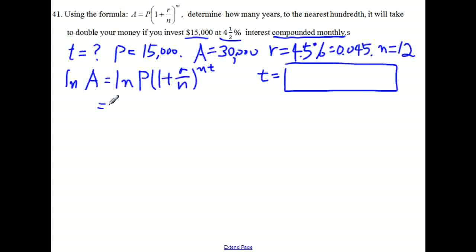Then, by applying the laws of logarithms, we can write the right side as the sum of these two logarithm expressions. Right? And then now, using another law of logarithms, we can write, we can now take this power down. So nt ln of 1 plus r over n.